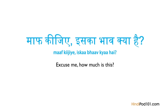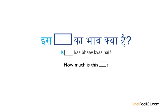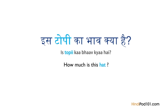If we want to be more specific when asking how much is this and refer to a certain type of object, we just insert the object between is and ka. For example, suppose you want to buy a hat in the market — hat in Hindi is topi. So: is topi ka bhaao kya hai? How much is this hat? But what if you want to buy several hats? Then you'd have to use a new word: in ka, which means these.